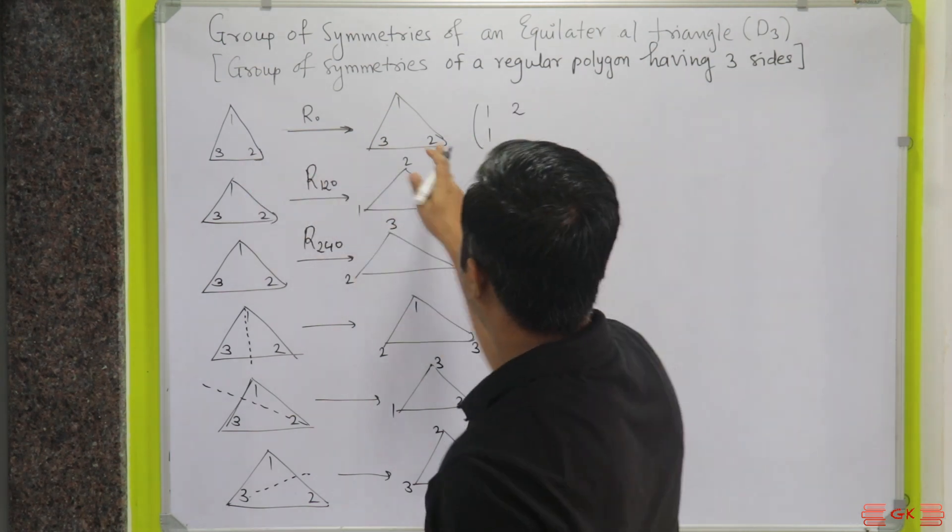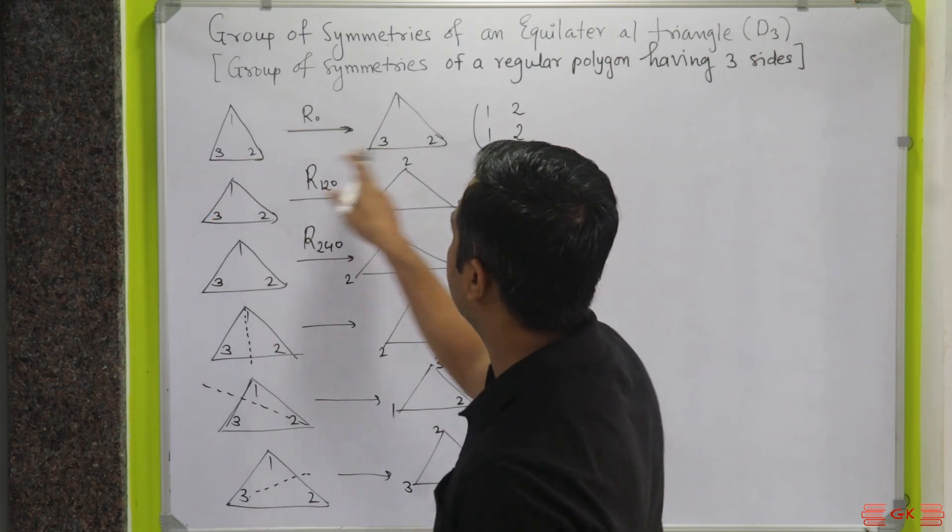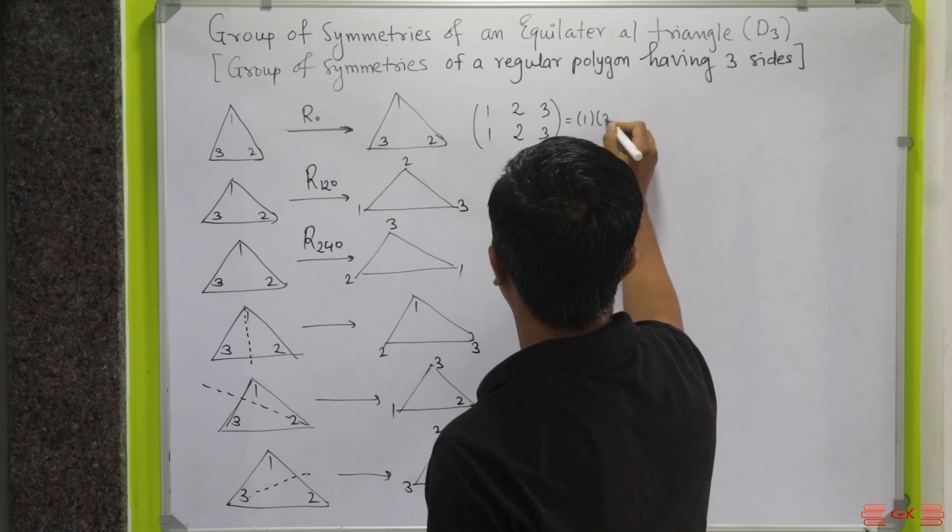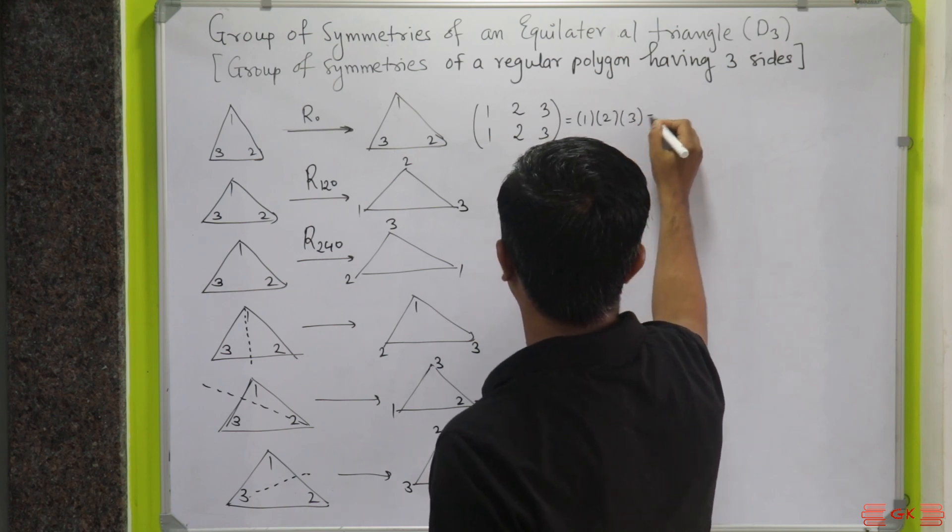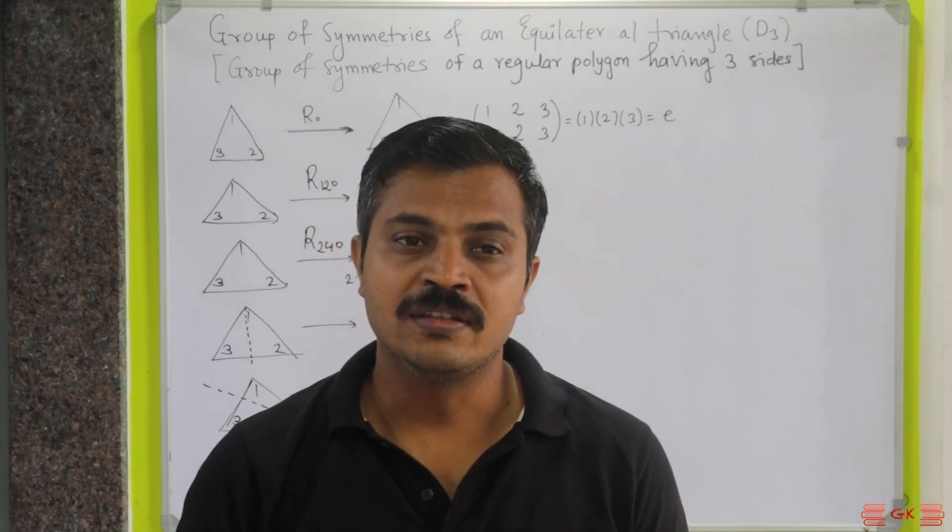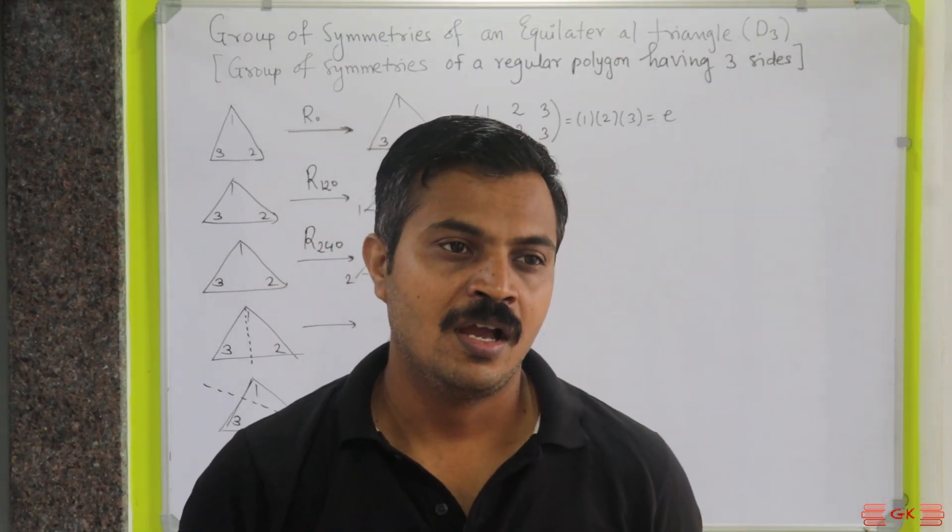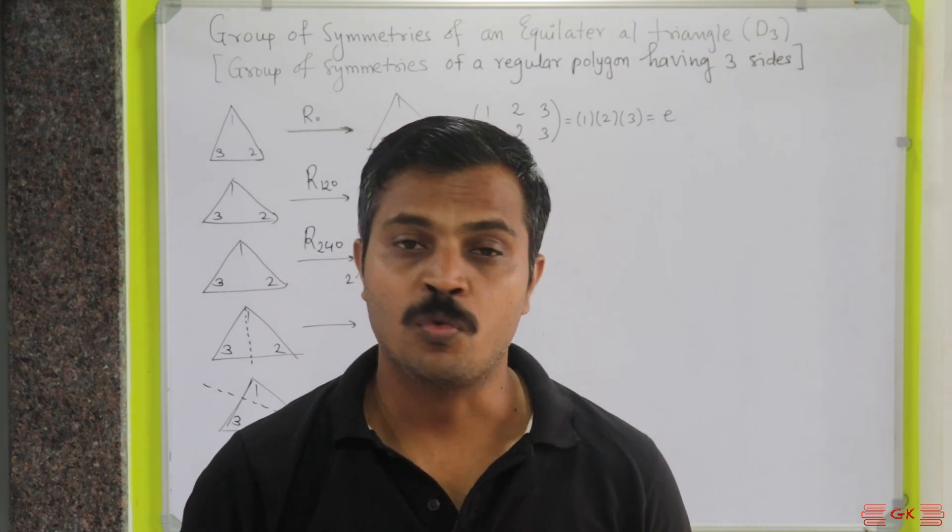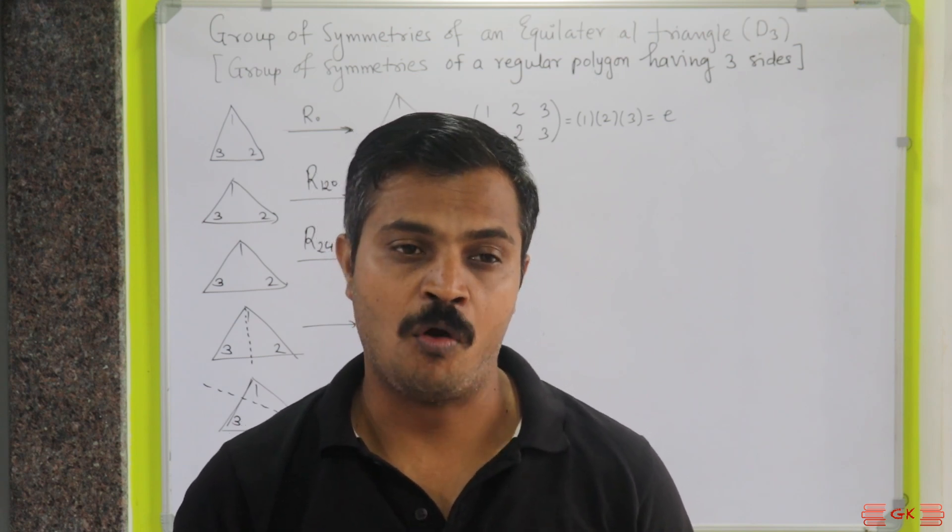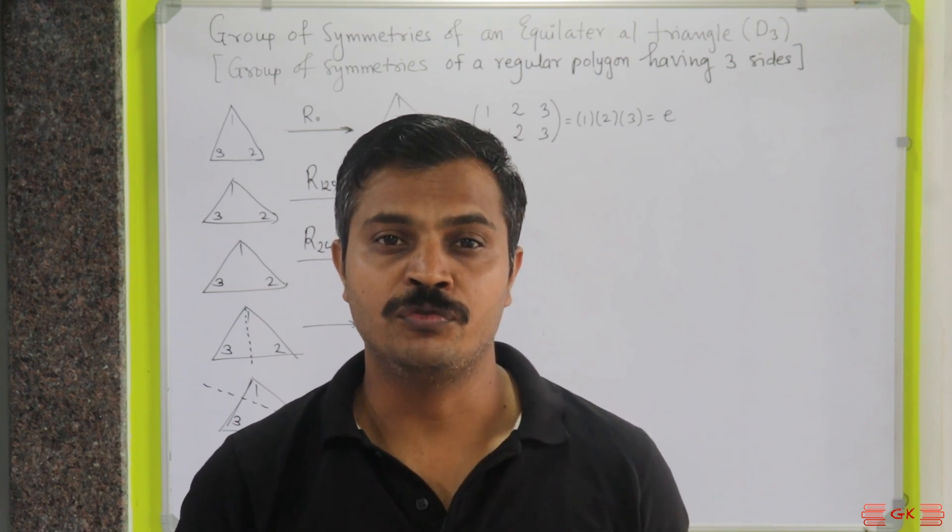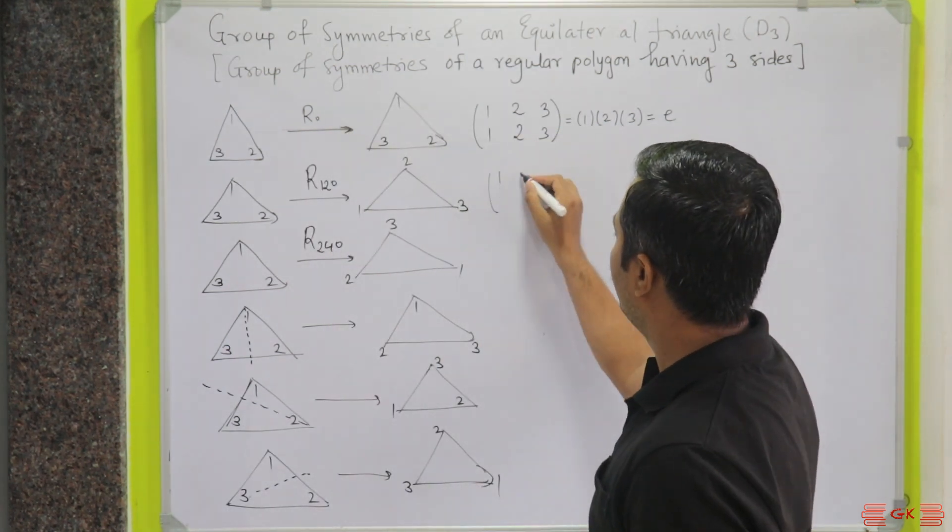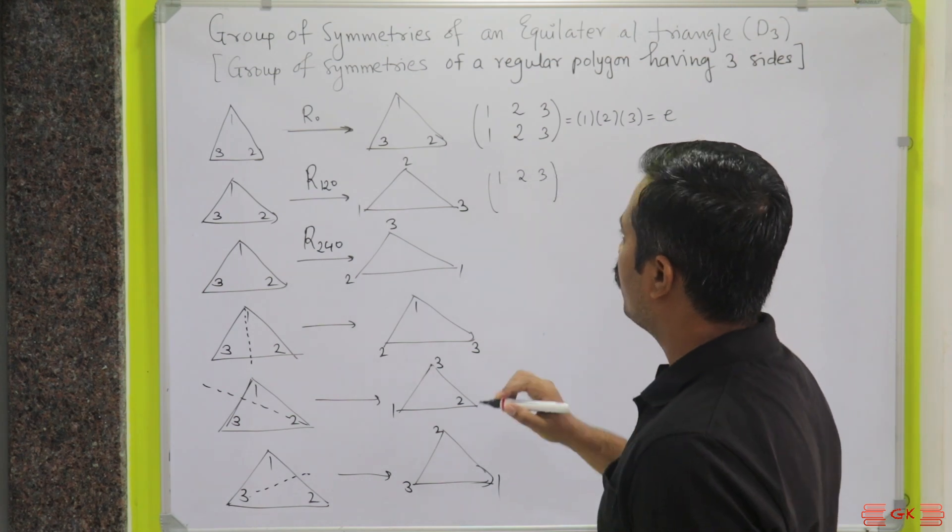One maps to one, then two maps to two, and then finally three maps to three. In the cyclic form, it can be written like this, and that is nothing but E, the identity. I am assuming that you know the theory of permutations—what is a permutation, the length of a permutation, how to write a permutation in cyclic form, how to take the product of two permutations, and so on.